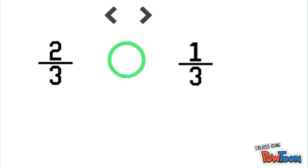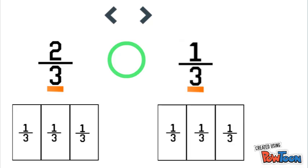Here we have two thirds and one third. The first thing to do when comparing any fractions is to look at their denominators. So we do that and we see that they both have a denominator of three, which means both visual models will be made out of thirds.